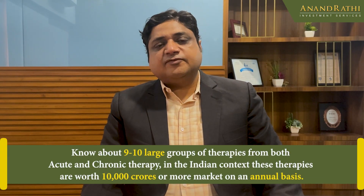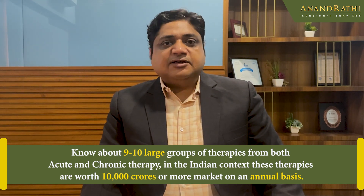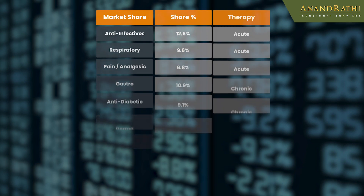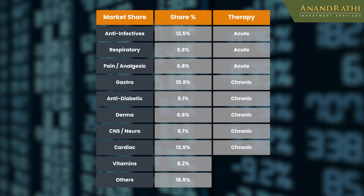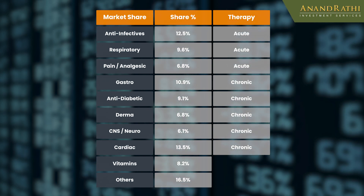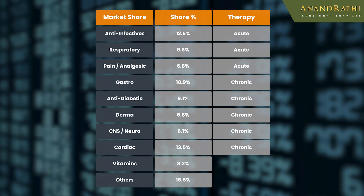Within these therapies, there are various subgroups. We will talk about 9 to 10 large therapy groups from both acute and chronic therapies that, in the Indian context, are worth 10,000 crores or more on an annual basis. These therapies are: pain, anti-infectives, cardiac, dermatology, CNS which covers neurological disorders, gastro, and vitamins and others. Among these, pain and anti-infectives are acute therapies, while gastro, cardiac, CNS, and neuro are considered chronic therapies.